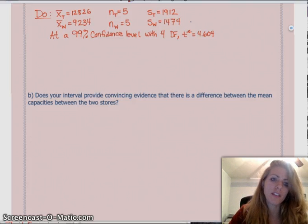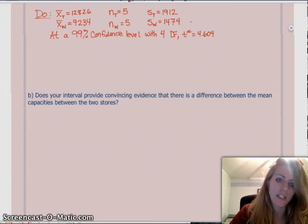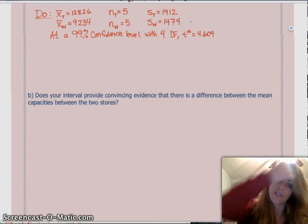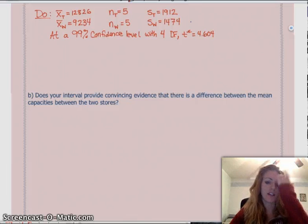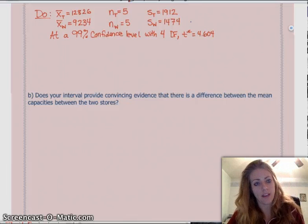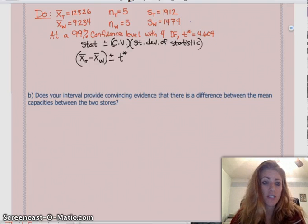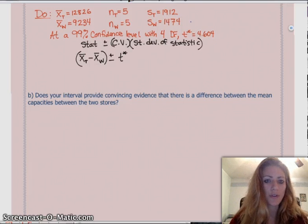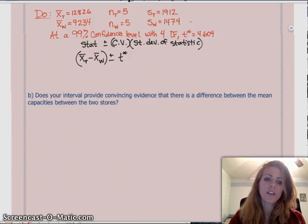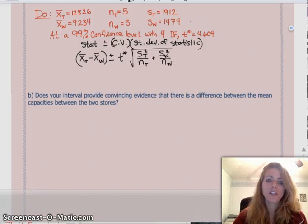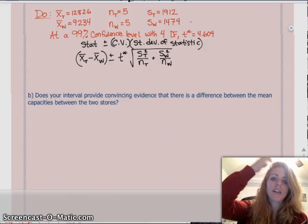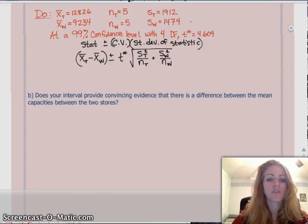So, we set up our confidence interval the same way we always do. Statistic plus or minus the critical value times the standard deviation of the statistic. In this case, it's standard error because we don't have sigma. And our statistic is the mean of Target minus the mean of Walmart. Standard deviation of the statistic is that funky square root of s₁² over n₁ plus s₂² over n₂.